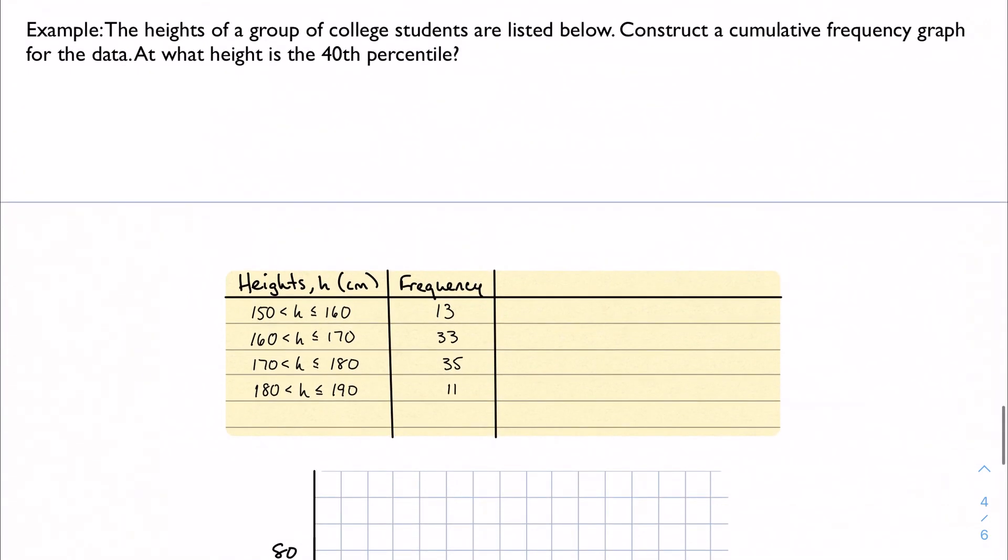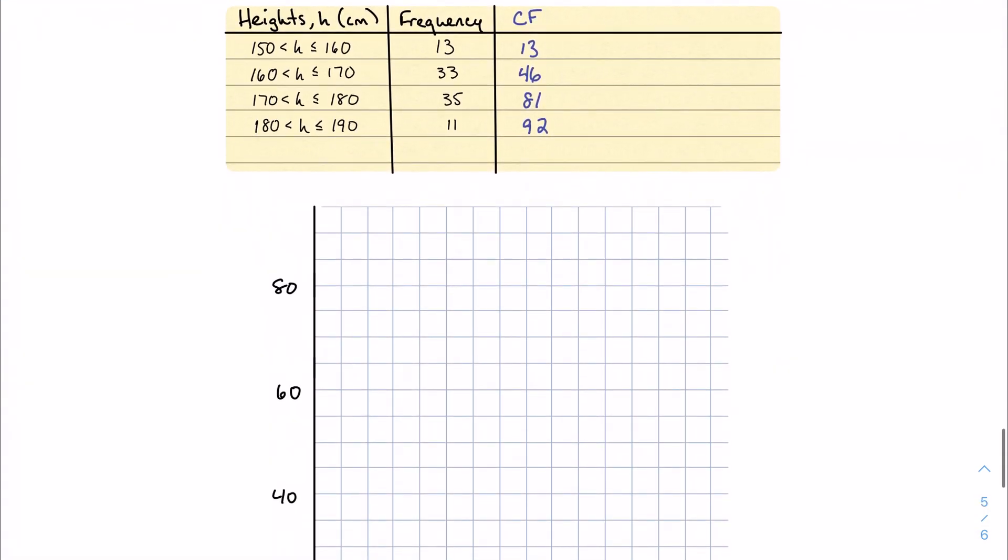So let's try one. The heights of a group of college students are listed below. Construct a cumulative frequency graph. Where is the 40th percentile? So let's do my cumulative frequency here. 13, and I'm keeping here just a running total of students. So 13 plus 33 is 46. 46 and 35 is 81. 81 and 11 is 92. So I'm just adding row by row. So that's it, that's all there is.